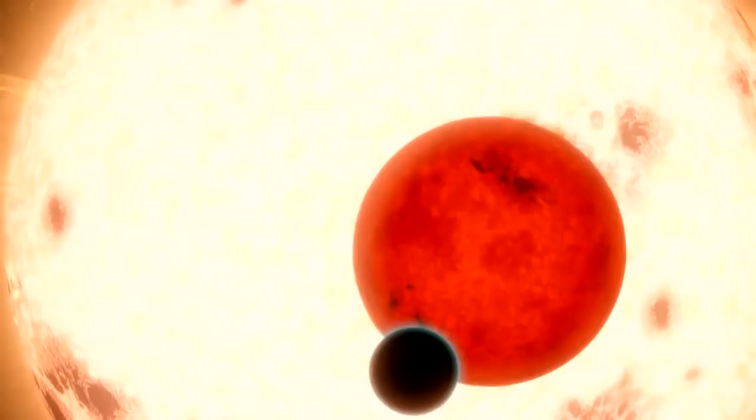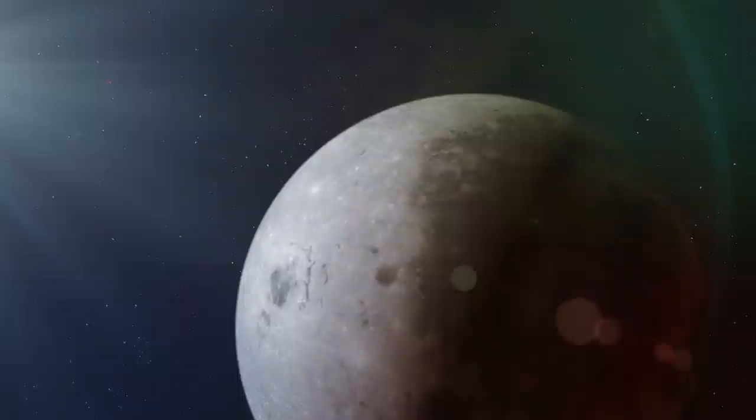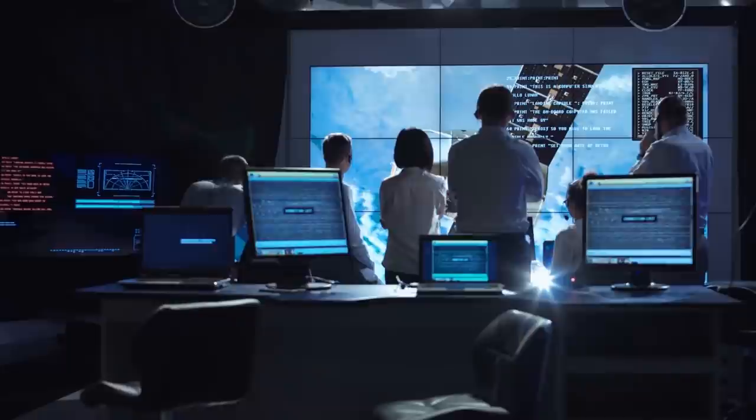Number 5: Exoplanets. An exoplanet is an extrasolar planet, which means a planet that is outside our solar system. Evidence of such exoplanets have existed since at least 1917, but it was unconfirmed and mostly brushed away by the scientific community.